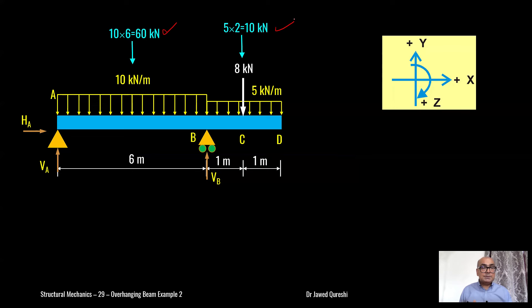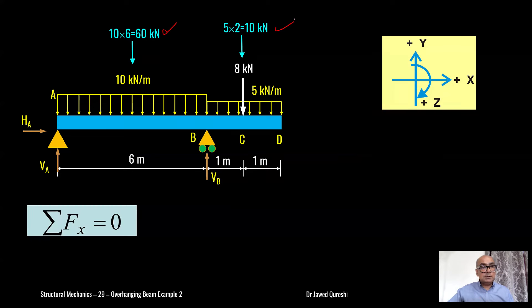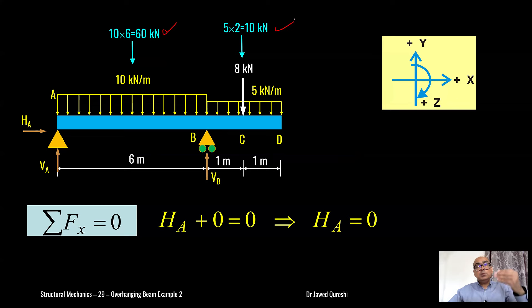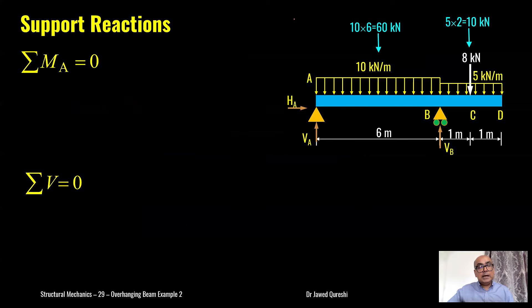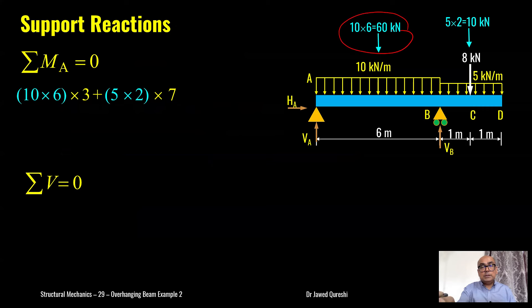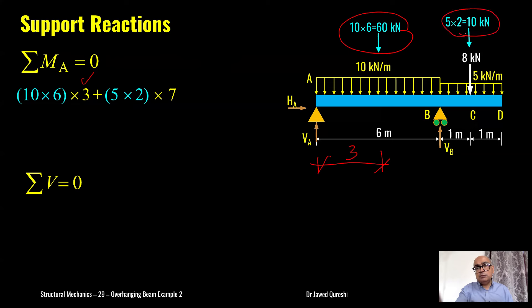The sign convention is: upward forces are positive, rightward forces are positive, and clockwise moment is positive. Summation of horizontal forces = 0, so the horizontal reaction is zero. Then I will use summation of moment at A = 0. The first load is the UDL which creates a clockwise moment with respect to A, and the distance is 3 meters from A.